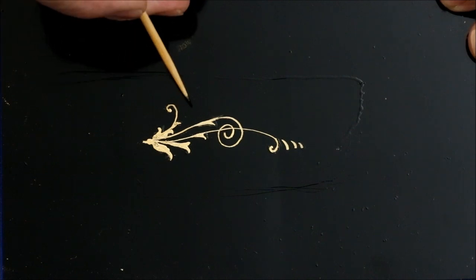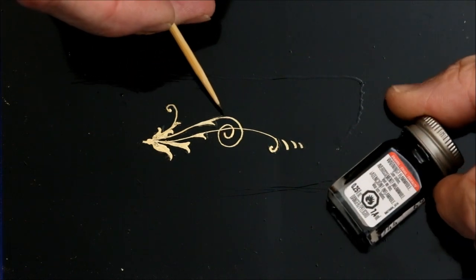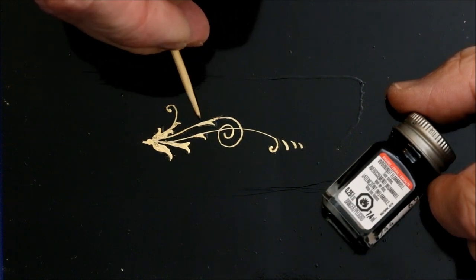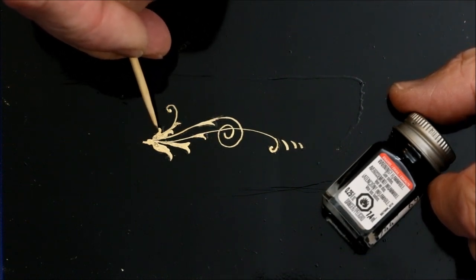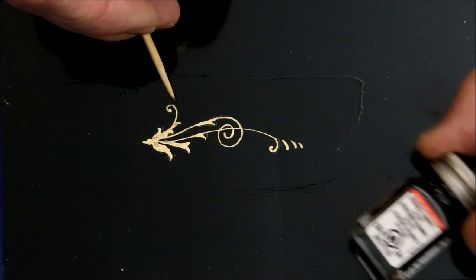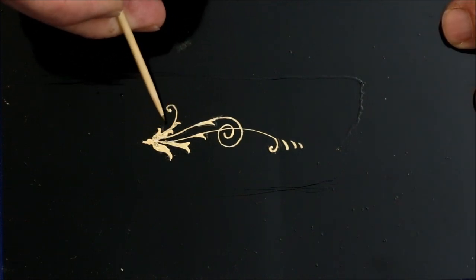Any minor defects can be covered up with some gloss black enamel, I like testers, and the skewer routine again where you can get down to very fine details. Next, what we need to do is embellish this with the colors.